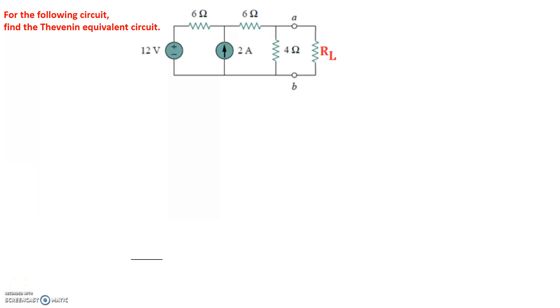In this example, we're asked to find the Thevenin equivalent circuit. In other words, what is the Thevenin equivalent voltage and the Thevenin resistance seen by the load from terminal AB? In order to do this, first we need to remove the load and then calculate the Thevenin resistance and the Thevenin voltage.